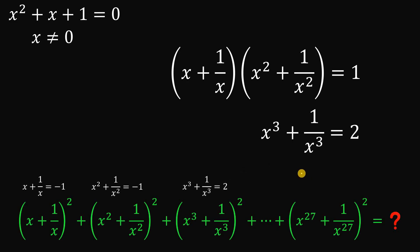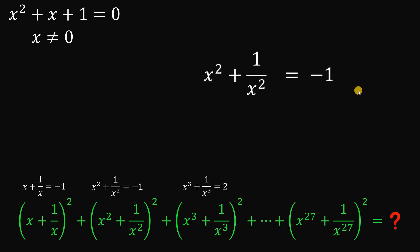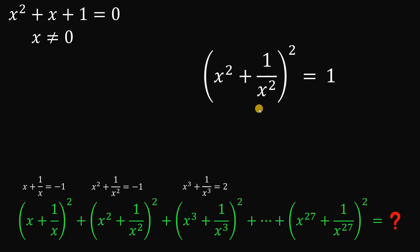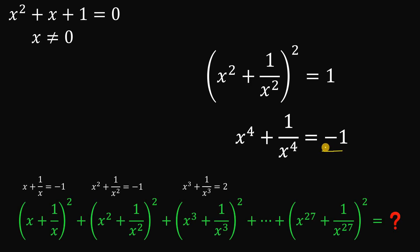Now for x⁴ + 1/x⁴, we use x² + 1/x² = −1 and square it. (−1)² = 1, and expanding the left side gives x⁴ + 2 + 1/x⁴. Subtracting 2 from both sides gives x⁴ + 1/x⁴ = −1.